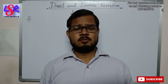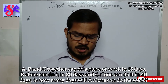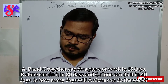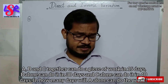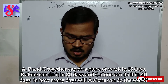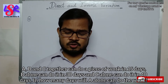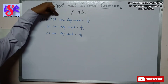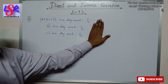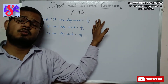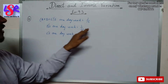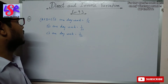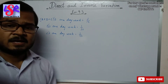Now let's move to question number 10. Here A, B and C together can do a piece of work in 15 days, B alone can do it in 30 days and C alone can do it in 40 days. How much time will A take to complete the whole work? A plus B plus C's one day work is 1 upon 15, B's one day work is 1 upon 30, and C's one day work is 1 upon 40.